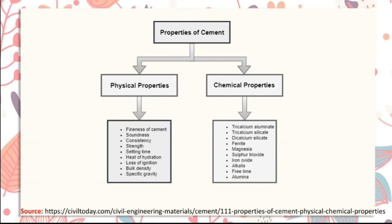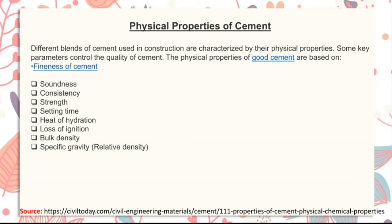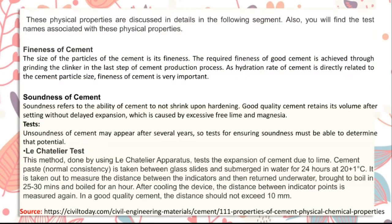Chemical properties of cement include: tricalcium aluminate, tricalcium silicate, dicalcium silicate, ferrite, magnesia, sulfur trioxide, iron oxide, alkalis, free lime, and alumina. Different blends of cement used in construction are characterized by their physical properties; some key parameters control the quality of cement. These physical properties — fineness, soundness, consistency, strength, setting time, heat of hydration, loss of ignition, bulk density, specific gravity, and relative density — are discussed in detail in the following segment.